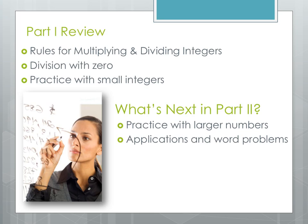Let's review what we covered in this video. First, we covered the rules for multiplying and dividing integers: multiply or divide like normal, then place the sign — same sign is positive, different sign is negative. We talked about division with zero: we can't divide by zero, but we can divide zero by another number and get zero. Then we did some practice with small integers. Next, in part 2 of sections 4 and 5, we'll practice with larger numbers and look at applications and word problems.